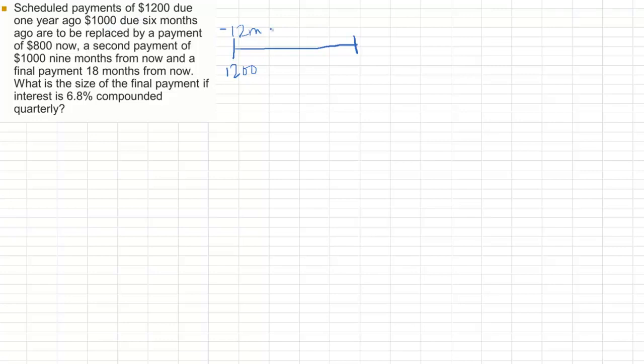Six months ago, there was $1,000 due. These two payments are to be replaced by a payment of $800 now or today. I'll call this zero or now. I'll put this in red. This will be $800 today. And also, a second payment of $1,000 nine months from now. Nine months, and that would be $1,000. And last of all, a final payment in 18 months.